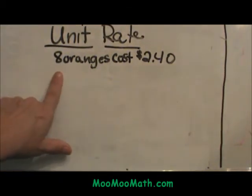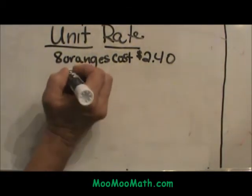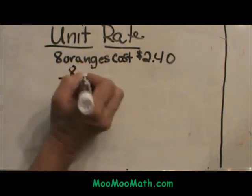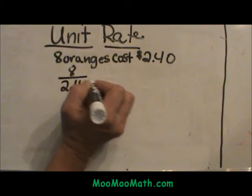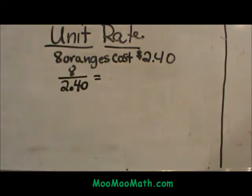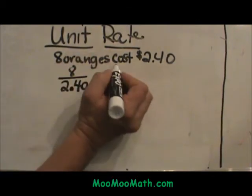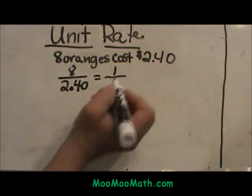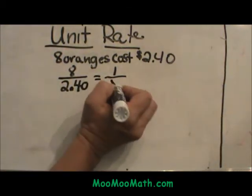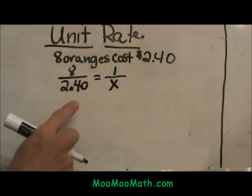We have 8 oranges and they cost $2.40. So let's set up our proportion: 8 over 2.40. Now we want to know the cost of one orange. The oranges are on top, so that is where our 1 is going to go. Because we want to know the cost of one orange and we don't know the cost, that is our variable x. Now we solve the cross product.